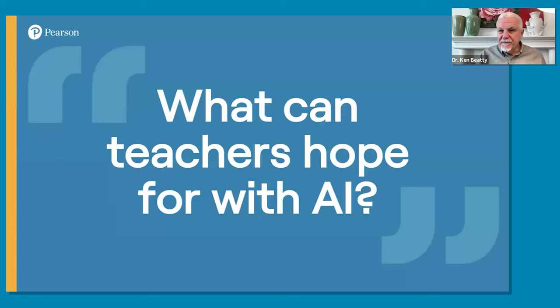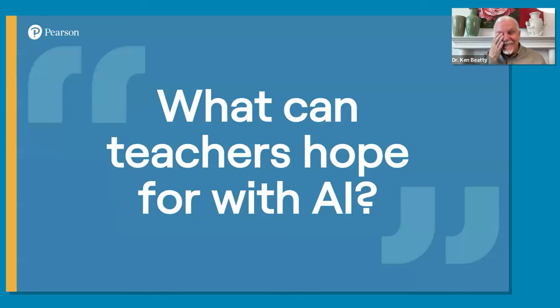So much bad news! But don't worry — what can we hope for with AI? There's some positive news. There are five things we can hope for: embracing change, identifying new objectives, celebrating the human touch, fostering independence, and challenging the status quo in different ways. Let's look at each of these in turn.